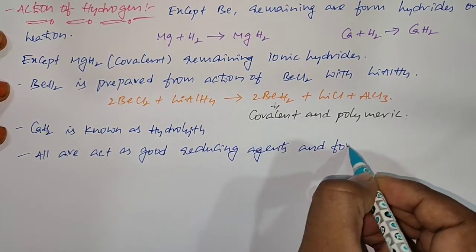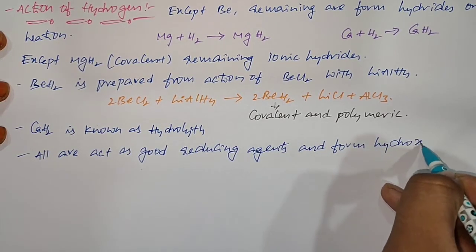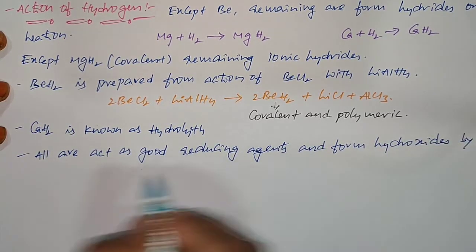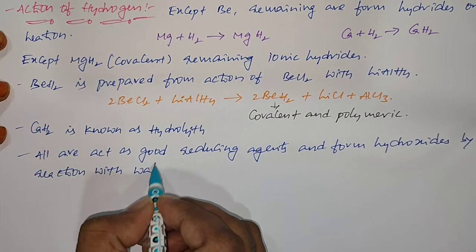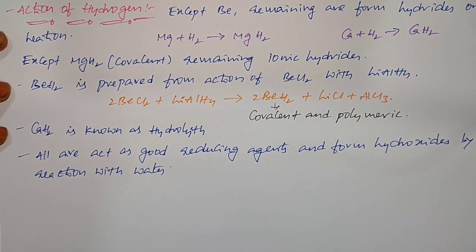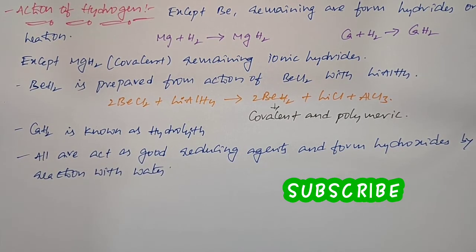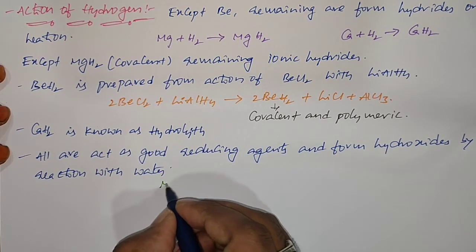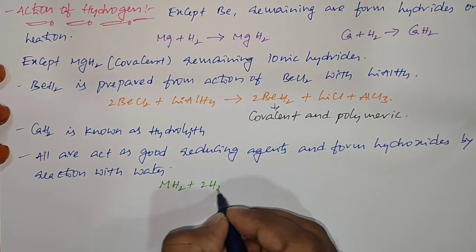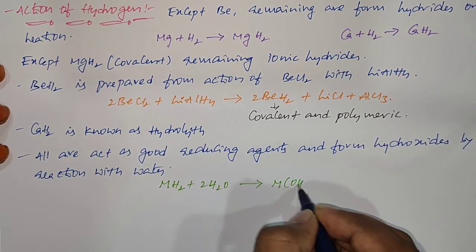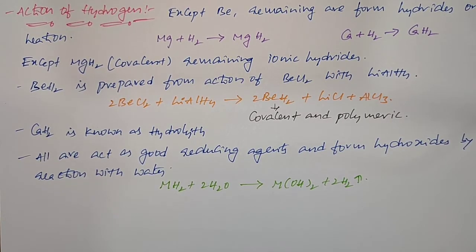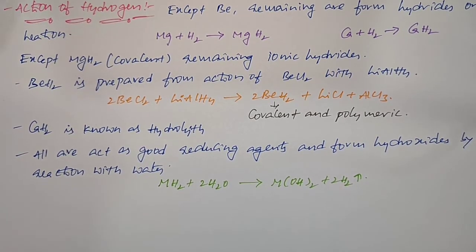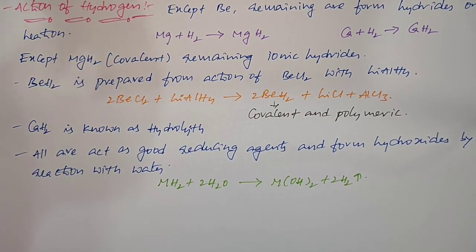The corresponding equation for hydrides reacting with water is: MH2 + 2H2O → M(OH)2 + 2H2, where M represents any 2A group element from beryllium to barium. This covers the action of hydrogen and the nature of hydrides.